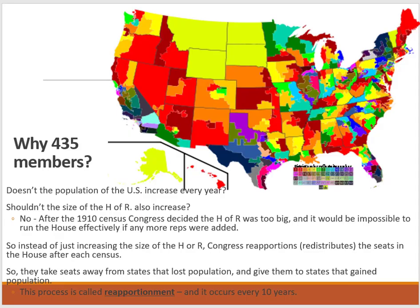In the house there are 435 members, and you might ask why 435 is the magic number — especially if the United States is growing in population. The answer is that after the 1910 census, Congress decided the House of Representatives was just getting too big. With 435 people trying to agree and pass legislation, it wouldn't be as effective if you kept adding more people to the mix.